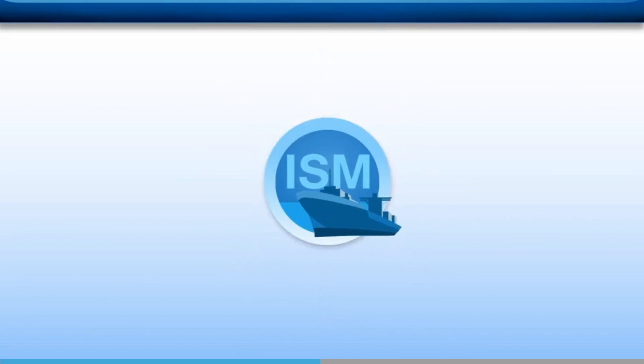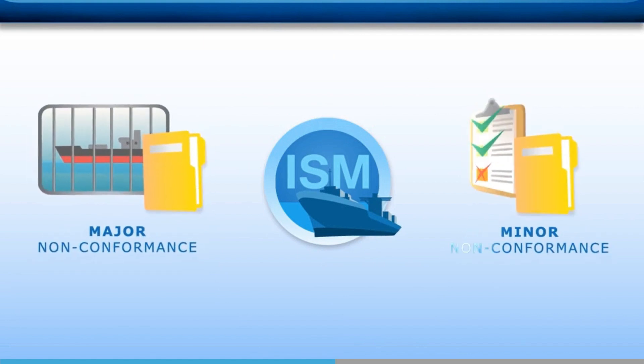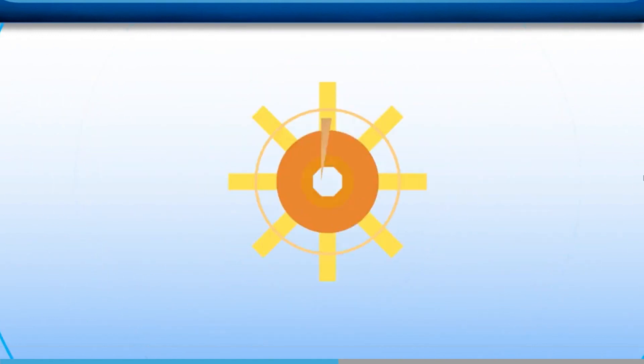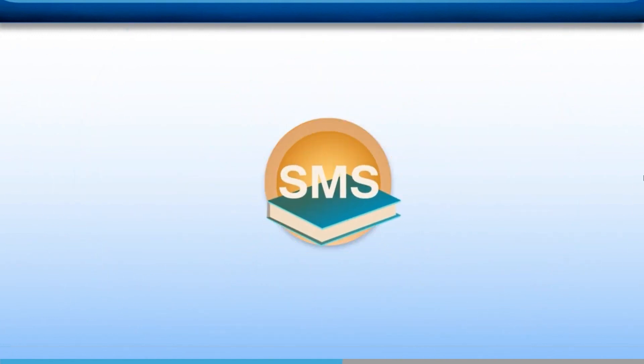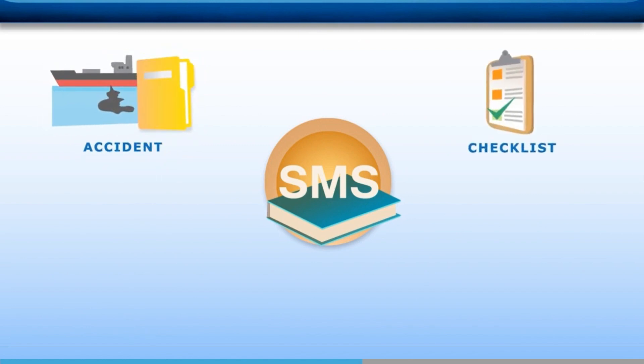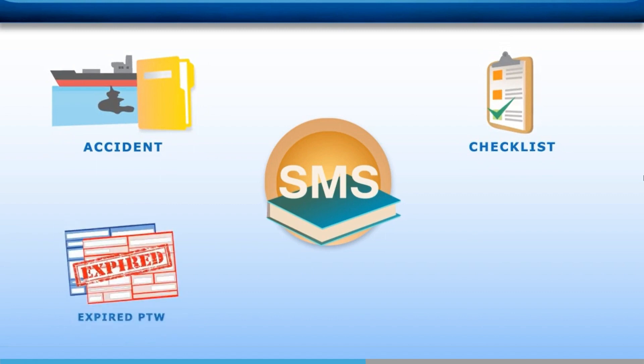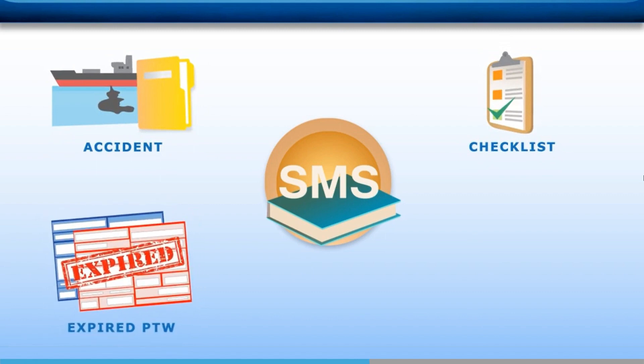The ISM code has no specific requirement for records to be kept, with the exception of those relating to inspections, non-conformities, and the corrective actions. In practice, however, you can't show that you are following the SMS unless you keep records, such as copies of accident and hazardous occurrence reports, completed checklists, expired work permits, and records of maintenance and testing.